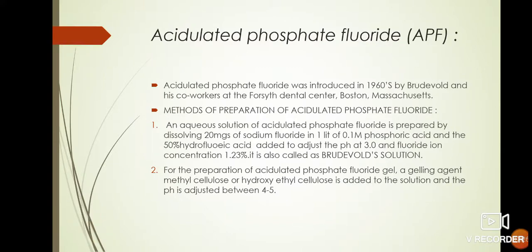Acidulated phosphate fluoride: acidulated phosphate fluoride was introduced in the 1960s by Brudevold and his co-workers at the Forsyth Dental Center, Boston, Massachusetts. Methods of preparation of acidulated phosphate fluoride: an aqueous solution of acidulated phosphate fluoride is prepared by dissolving 20 mg of sodium fluoride in 1 liter of 0.1 M phosphoric acid and 50% hydrofluoric acid is added to adjust the pH at 3.0 and fluoride ion concentration is 1.23%. It is also called Brudevold's solution.